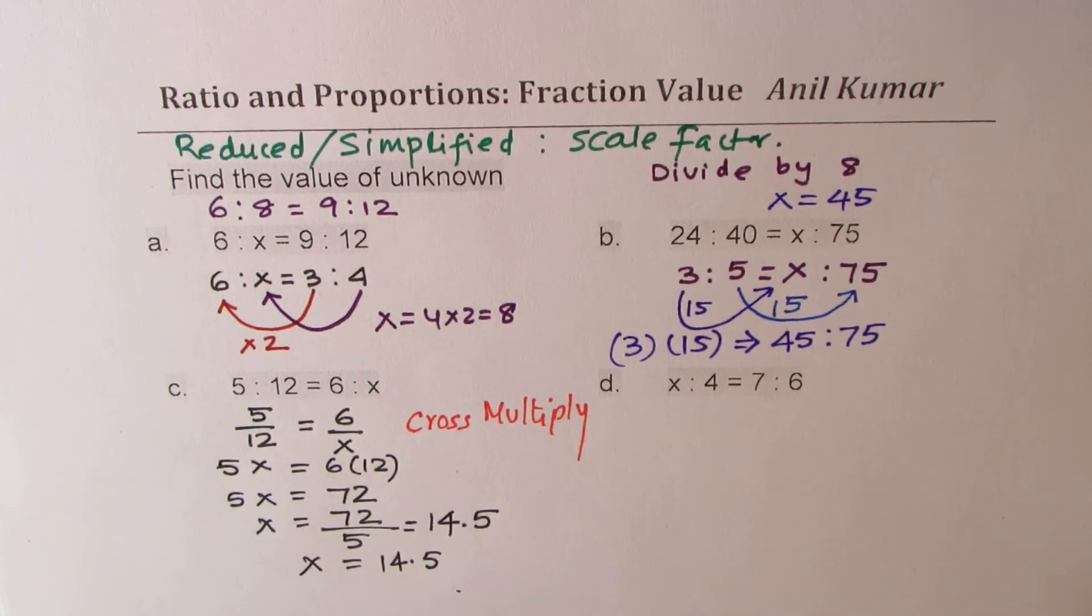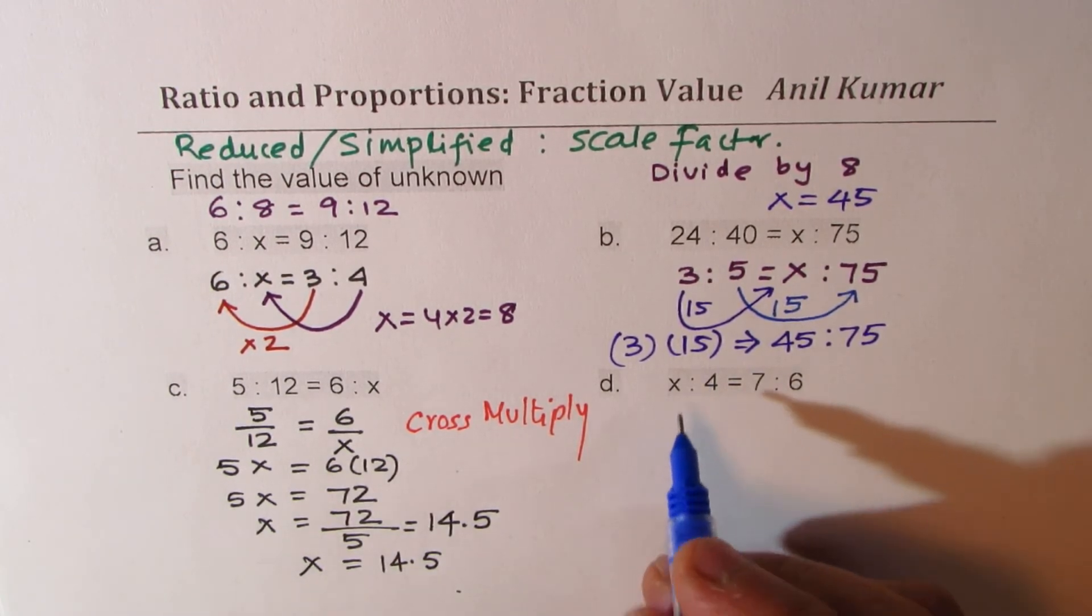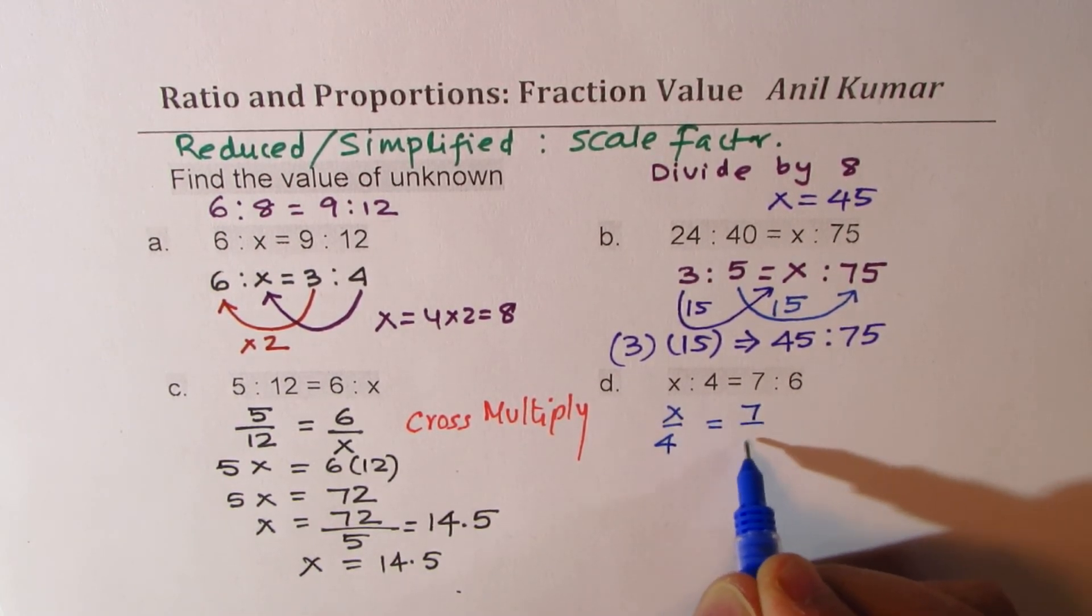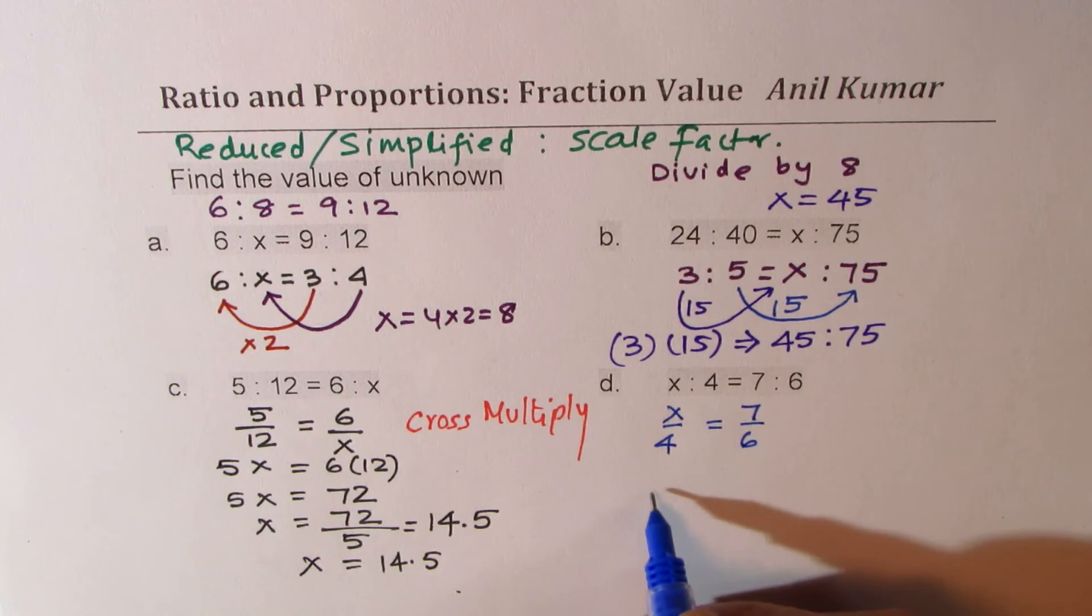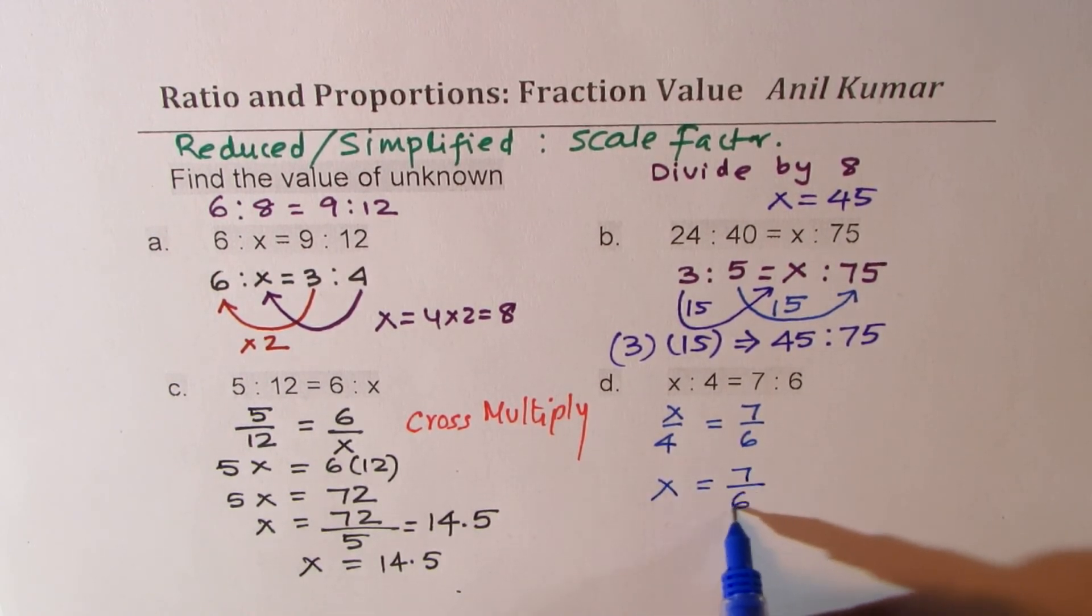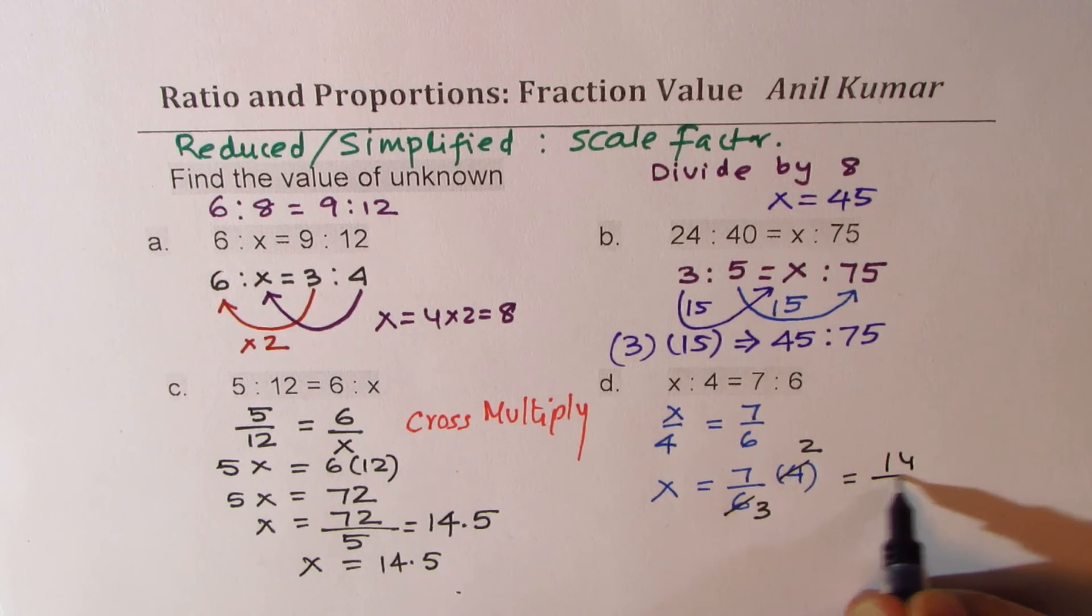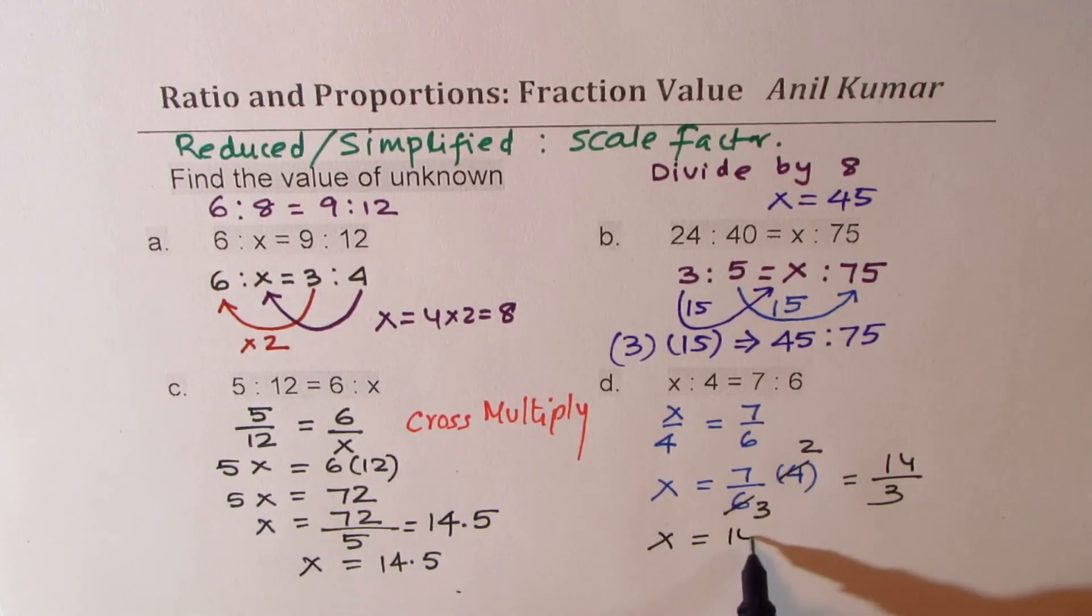Same as the case with the next example. In this case we get x over 4 equals to 7 over 6. And we can cross multiply x equal to 7 over 6 times 4. Now this you could simplify a bit and write down the answer in fractions. Dividing by 2 we get 14 over 3 as the value of x. So we get x as equal to 14 over 3.